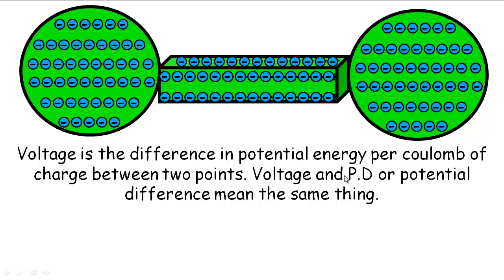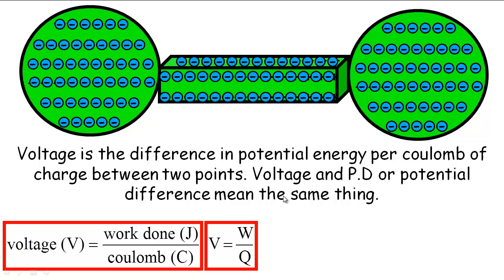So voltage is just the amount of potential energy per coulomb of charge. Voltage and potential difference mean the same thing. At the moment, there's no potential difference between these two spheres. And if we ripped some electrons off and shoved them on this side, did some work on them, the electrons on this side would have gained some energy. So each coulomb of charge would have more energy on this side than on this side. Then there would be a difference. Voltage is defined as the amount of work done in joules per coulomb. So volts could be written as just joules per coulomb, joule stroke coulomb as the unit.